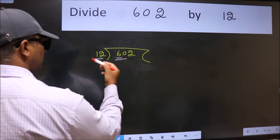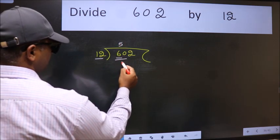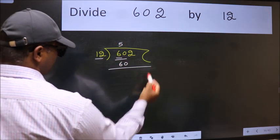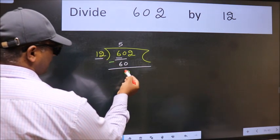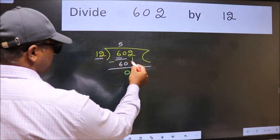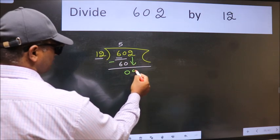When do we get 60 in 12 table? 12 fives 60. Now we should subtract. We get 0. After this bring down the beside number. So 2 down.